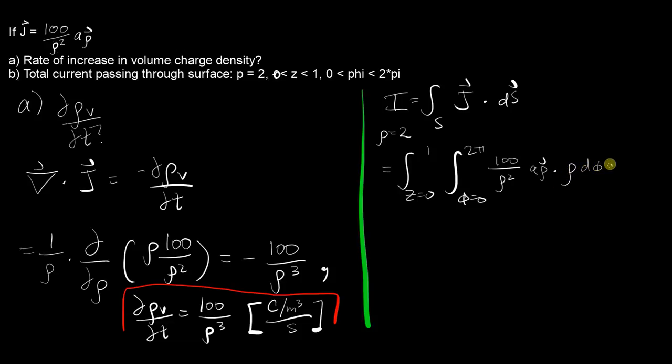We can pull a couple things out. We said rho is a constant two here, so this rho squared becomes four, 100 over four becomes 25, so we can pull out 25.